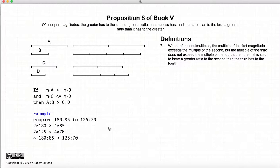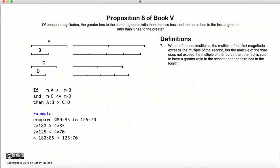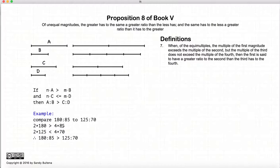I gave an example here. Let's look at these two ratios: 180 to 85 compared to 125 to 70. Now 2 times 180 is greater than 3 times 85, and 2 times 125 is also greater than 3 times 70. So 2 and 3 wouldn't be good numbers to look at. However, 2 times 180 is greater than 4 times 85, and 2 times 125 is less than 4 times 70. So here we have N equal to 2, M equal to 4. In this case it's greater than, and in this case it's less than.